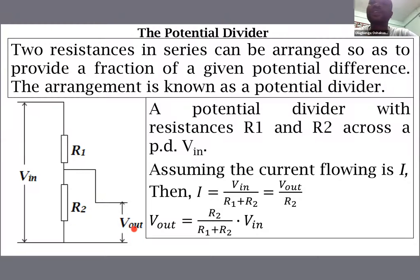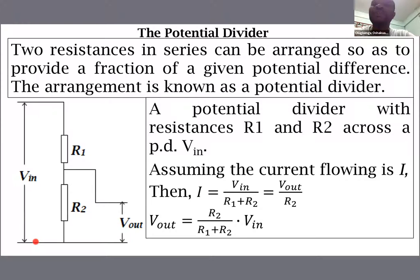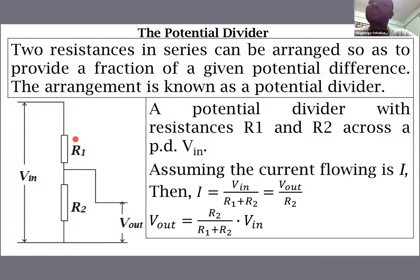From Kirchhoff's voltage law, the voltage that drops across R1 and the voltage that drops across R2, when added together, should give us V-in. So V-out is just the voltage across R2. We determine the voltage that will drop across R2 using the knowledge of the input voltage and these two resistors.